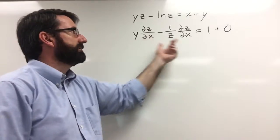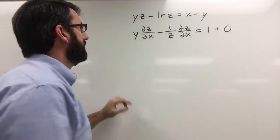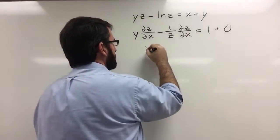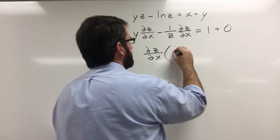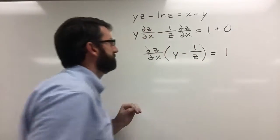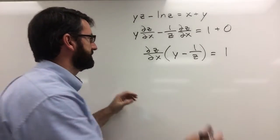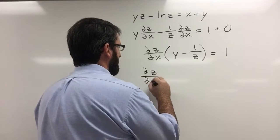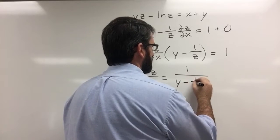Now to find the partial derivative of z with respect to x, we just need to solve for it. We factor that derivative out, giving us the partial derivative of z with respect to x times (y minus 1 over z) equals 1. Dividing both sides by (y minus 1 over z), we get the partial derivative of z with respect to x equals 1 over (y minus 1 over z).